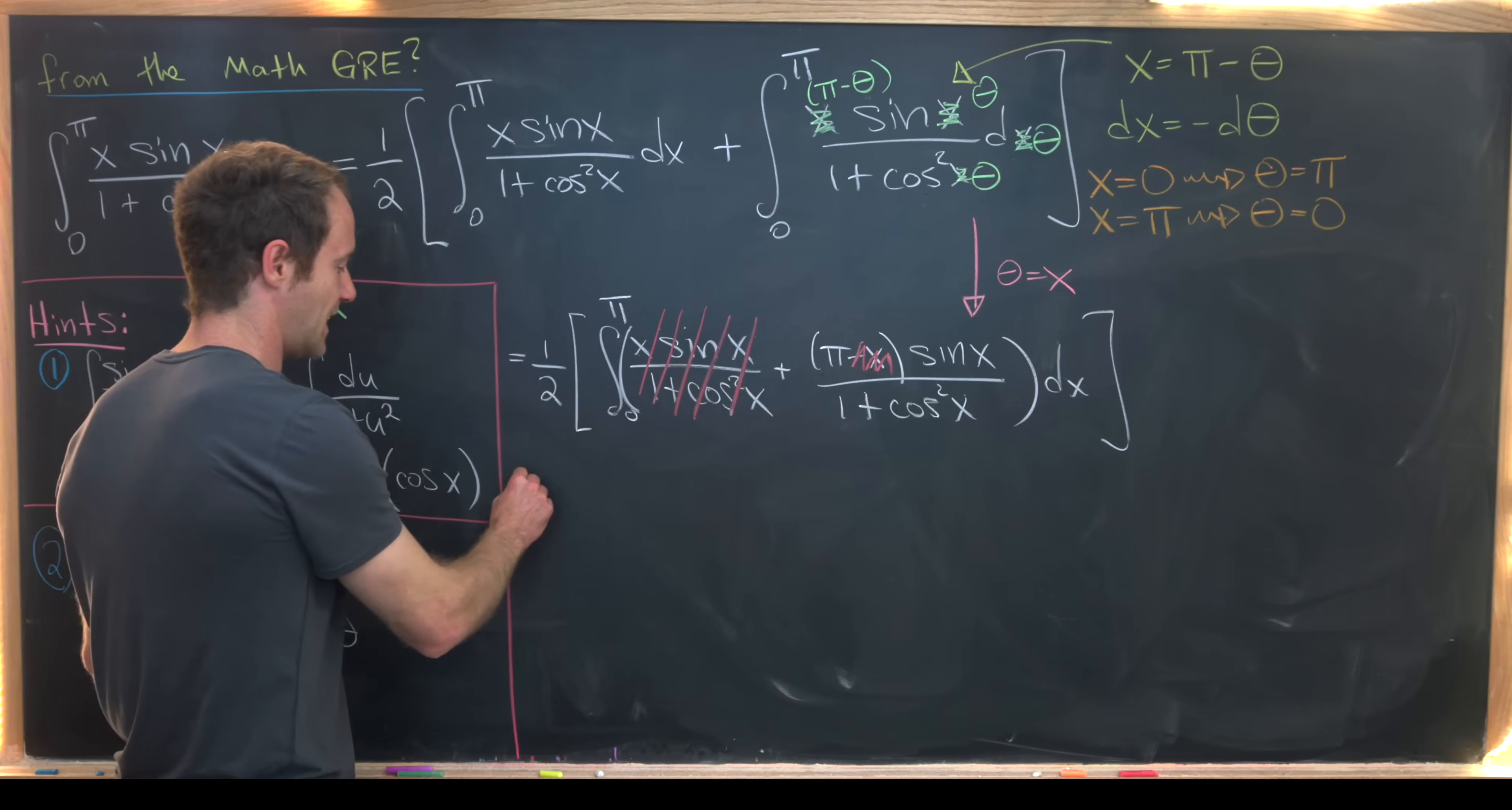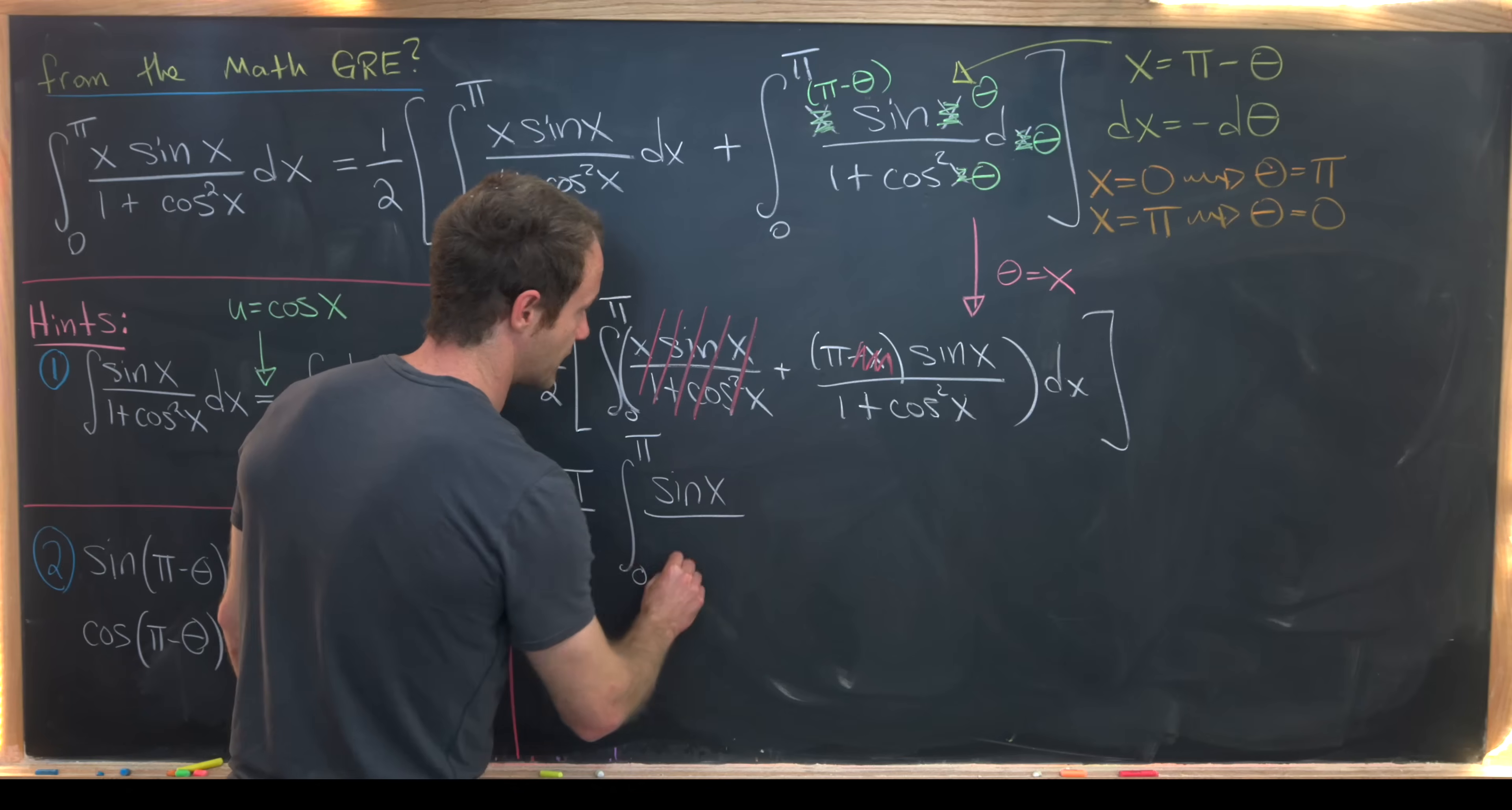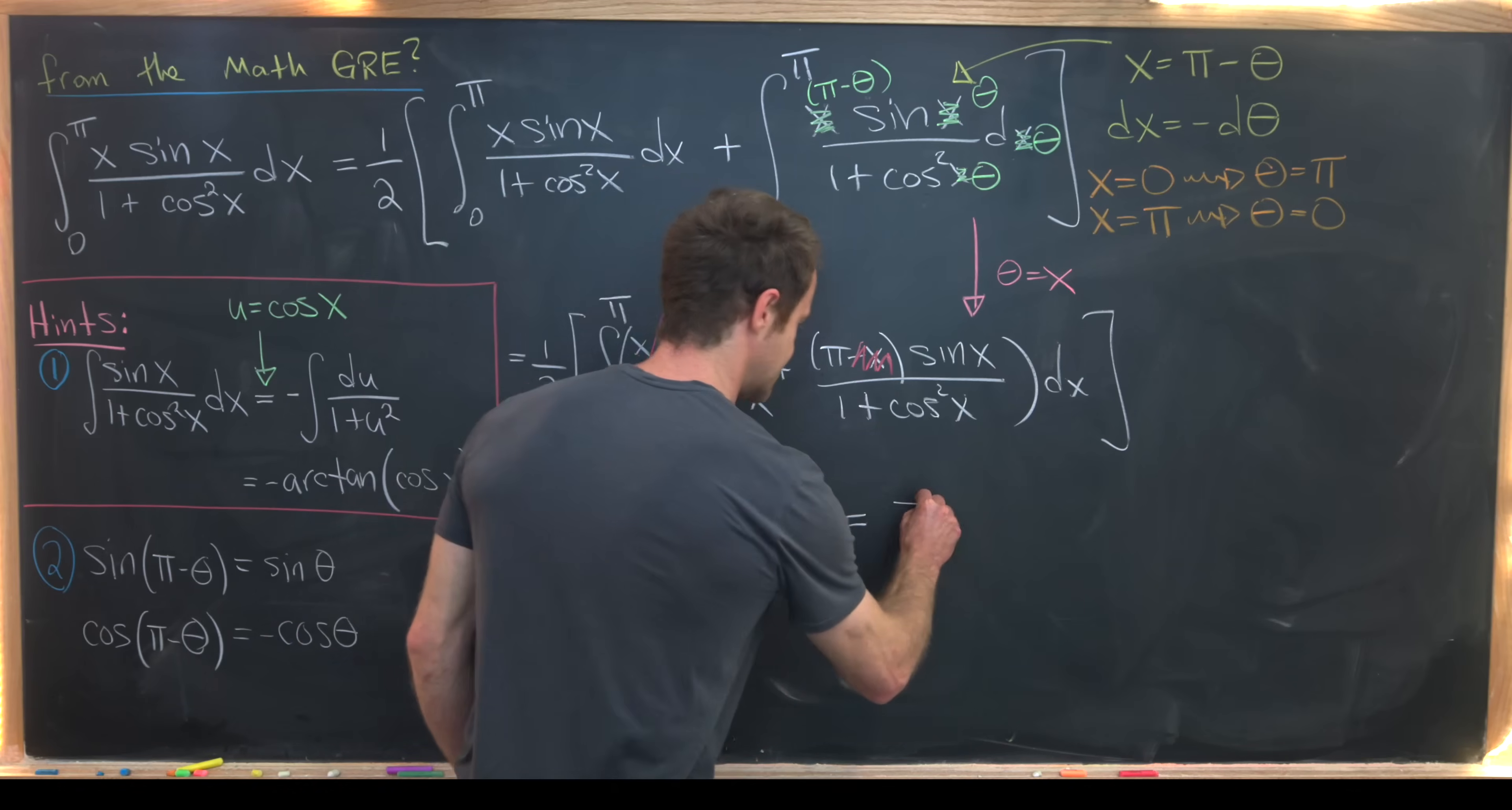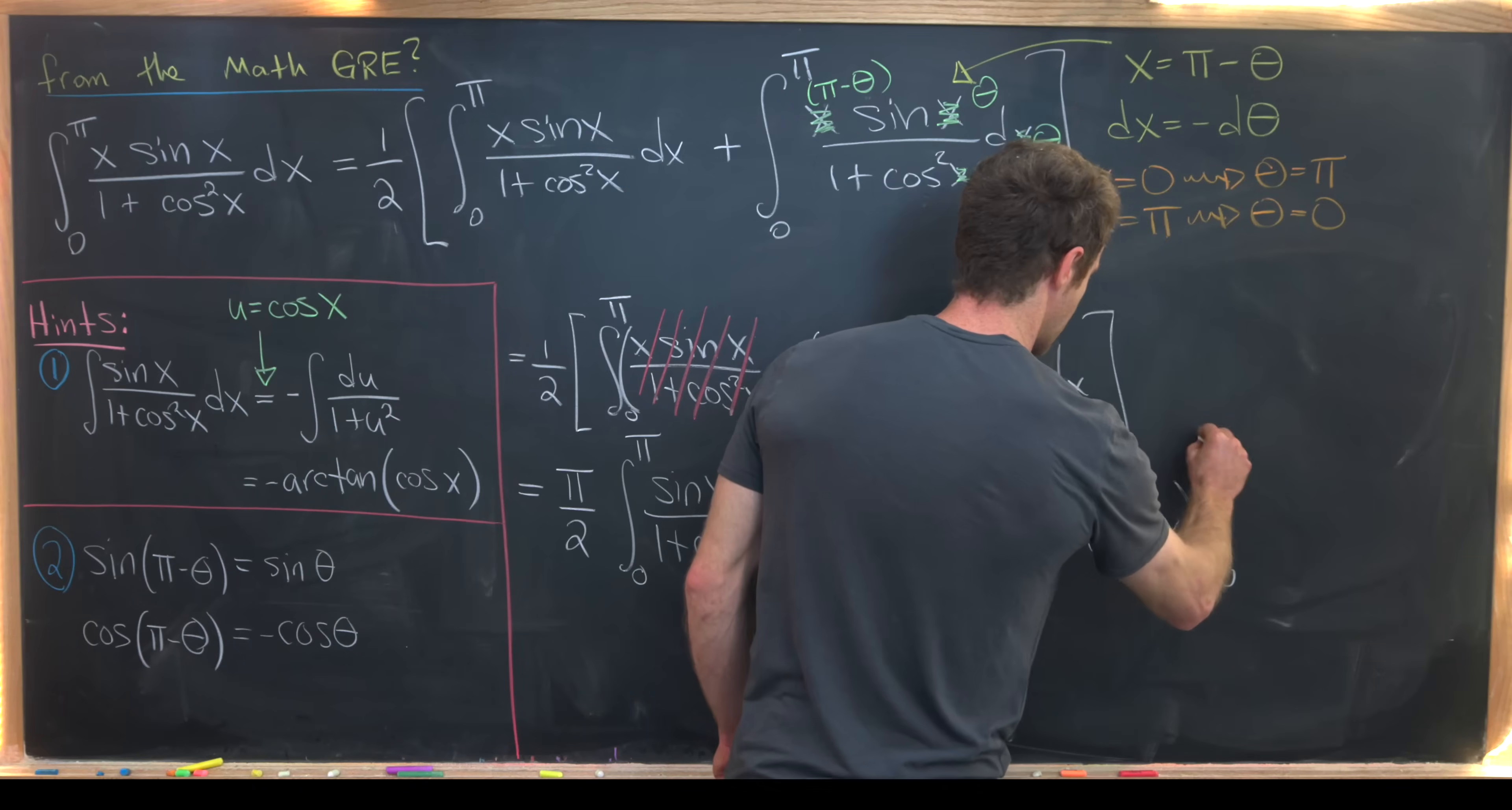Then we have the integral from 0 to pi of sine of x over one plus cosine squared of x dx. Like I pointed out here, via this simple u substitution, I can turn that into minus arctan of cosine of x. So here we have this is minus pi over 2 arctan of cosine of x. And then we need to evaluate that from 0 up to pi.